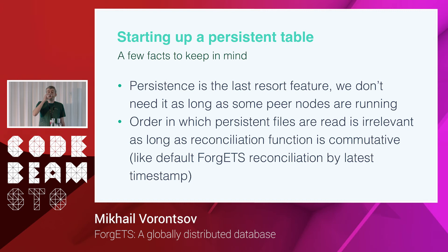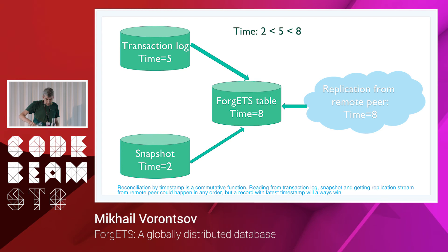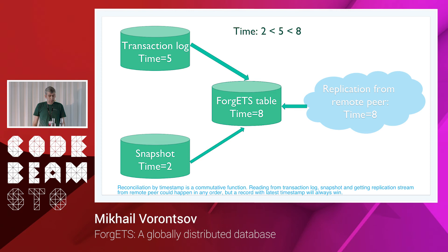Here's an example of why it matters. We start a node with an empty Vargets table, read the transaction log file which has a record for a key with timestamp 5, and write it. Then we read the snapshot, which has a record for the same key with timestamp 2 — less than 5 — so we don't overwrite. Finally, the node gets a live update from a remote peer for the same key with timestamp 8, which is greater than 5, so we write it. Regardless of the order in which you receive all these updates, you will end up in the correct state — the only requirement is that updates are processed in one thread to avoid races.